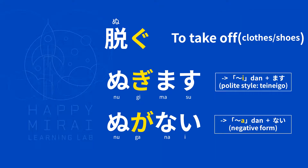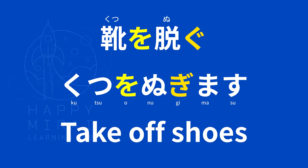Next verb: 脱ぐ (nugu) — to take off clothes or shoes. 脱ぎます (nugimasu). 脱がない (nuganai). Example: 靴を脱ぐ (kutsu wo nugu) — 靴を脱ぎます (kutsu wo nugimasu) — take off shoes.